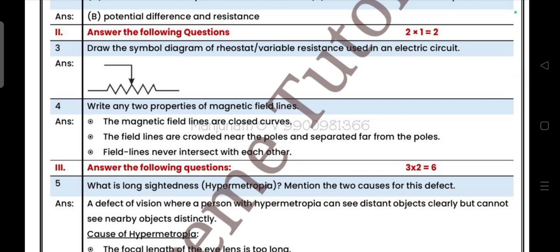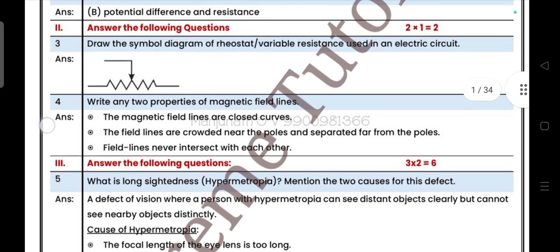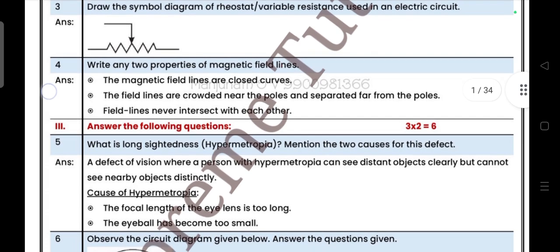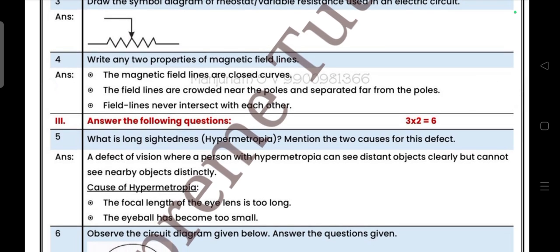Next, answer the following questions. Two questions will be there, each carries one mark. Draw a symbol diagram of rheostat or variable resistance used in an electric circuit. So symbol is like this. Write any two properties of magnetic field lines. Magnetic field lines are closed curves. The field lines are crowded near the poles and separated far from the poles. Field lines never intersect each other.